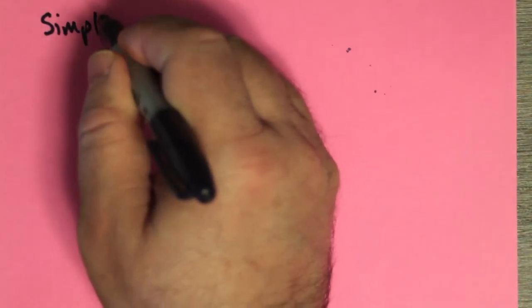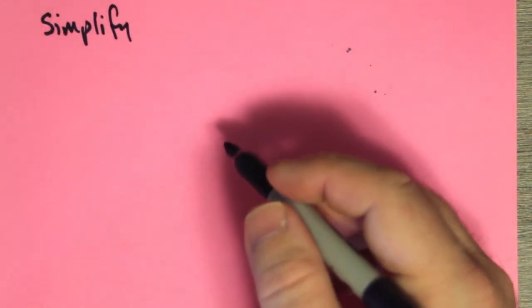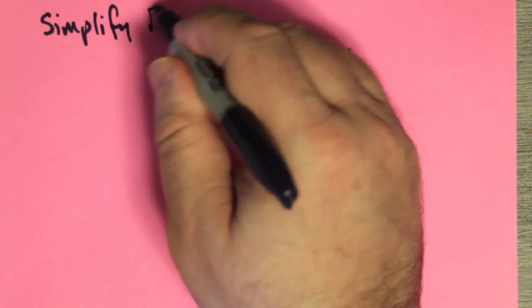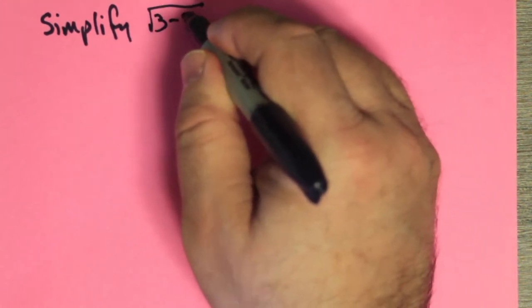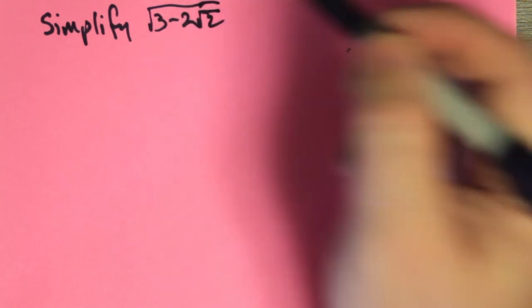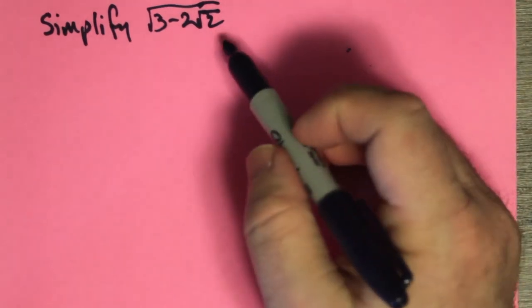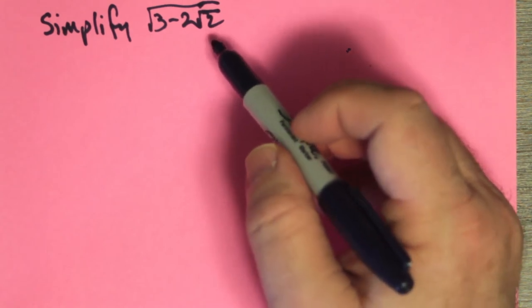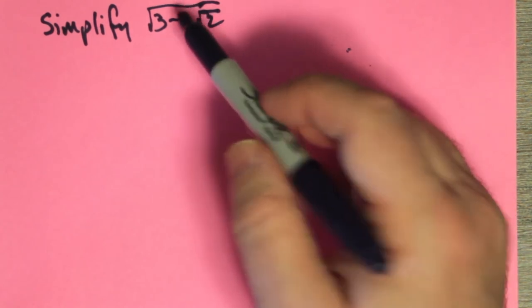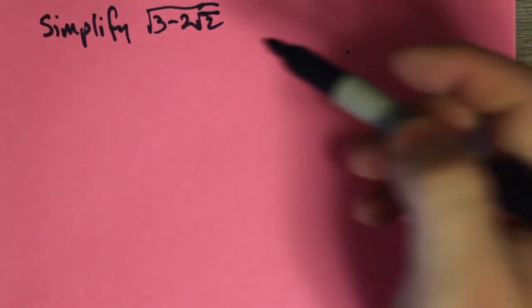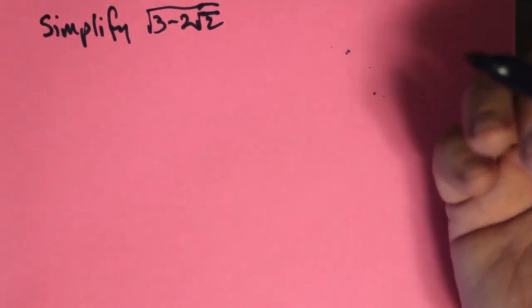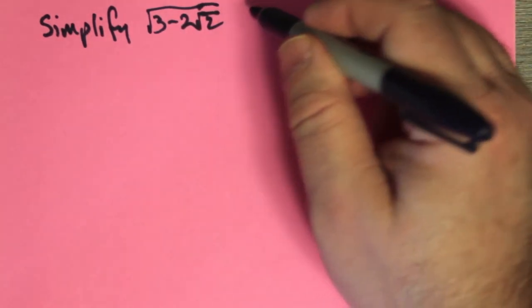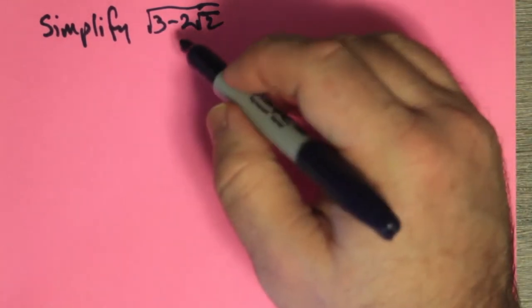Suppose we were told to simplify the square root of 3 minus 2 root 2. So notice that this one's a strange one because it's got a root 2 underneath another square root. So this is a rather strange one to have to simplify. But this one is actually kind of a perfect square in disguise.